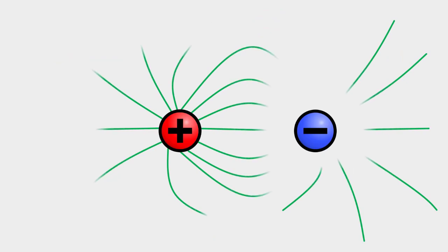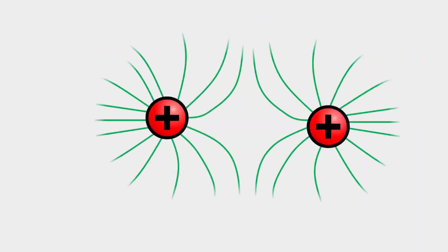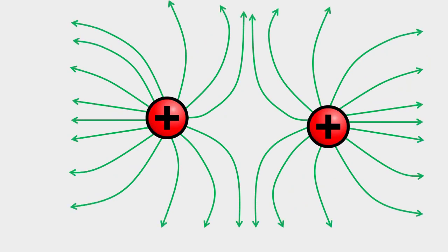If two unlike charges are placed close to each other, they get attracted. If two like charges are placed close to each other, they get repelled.